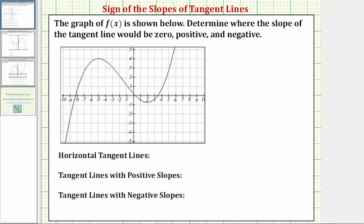Going back to our example, let's first determine where we have horizontal tangent lines. Notice that at this high point here, the tangent line would be horizontal because the slope of this line is zero. The tangent line would also be horizontal at this low point here, because the tangent line has a slope of zero. So notice how the horizontal tangent lines occur at x equals negative five and x equals positive two. The horizontal tangent lines occur at x equals negative five, positive two.